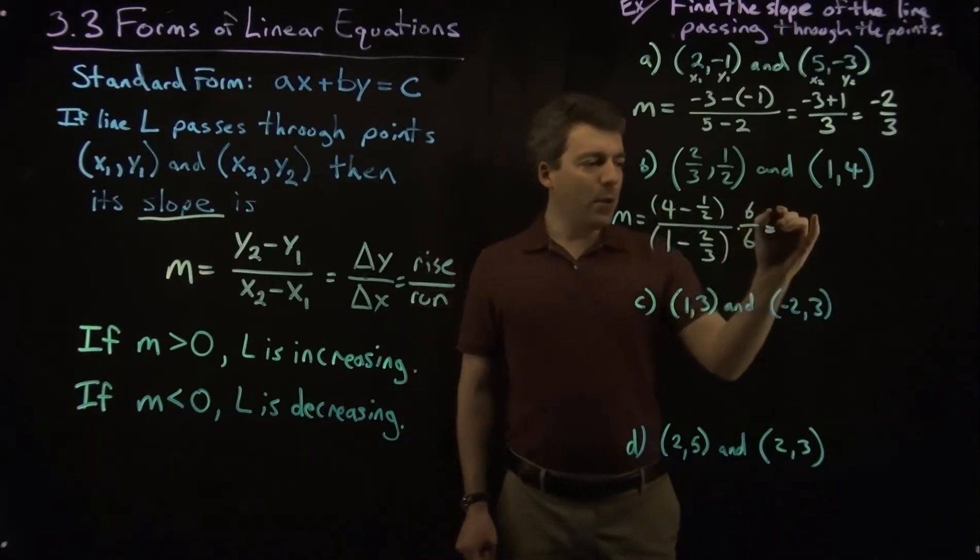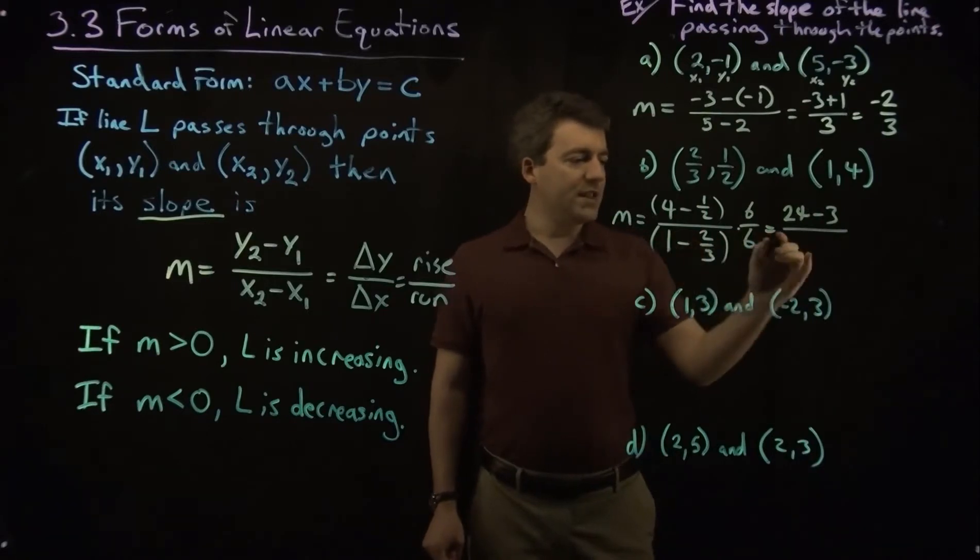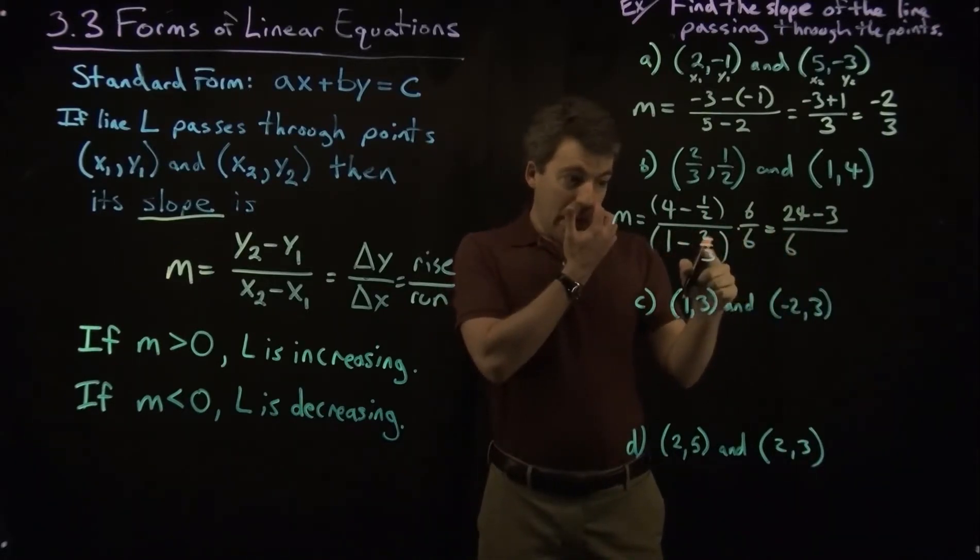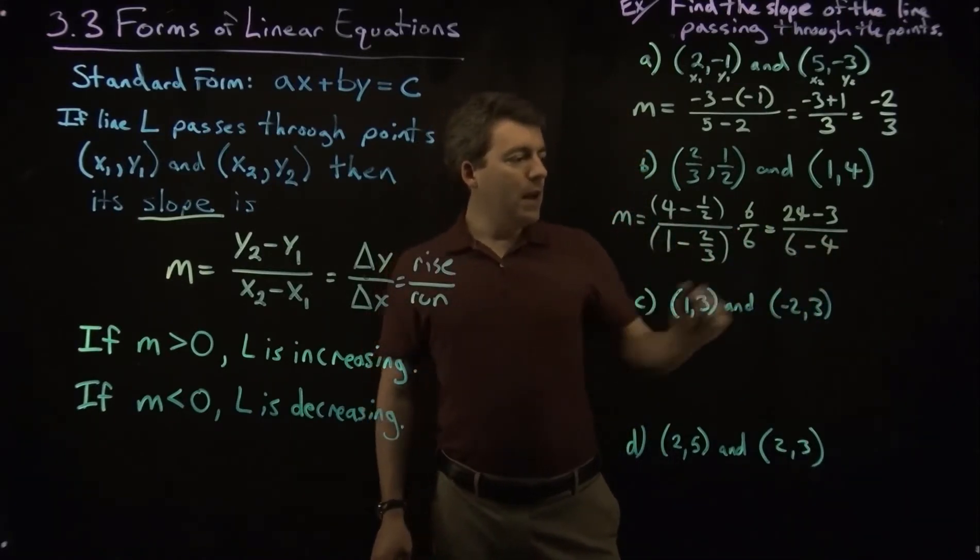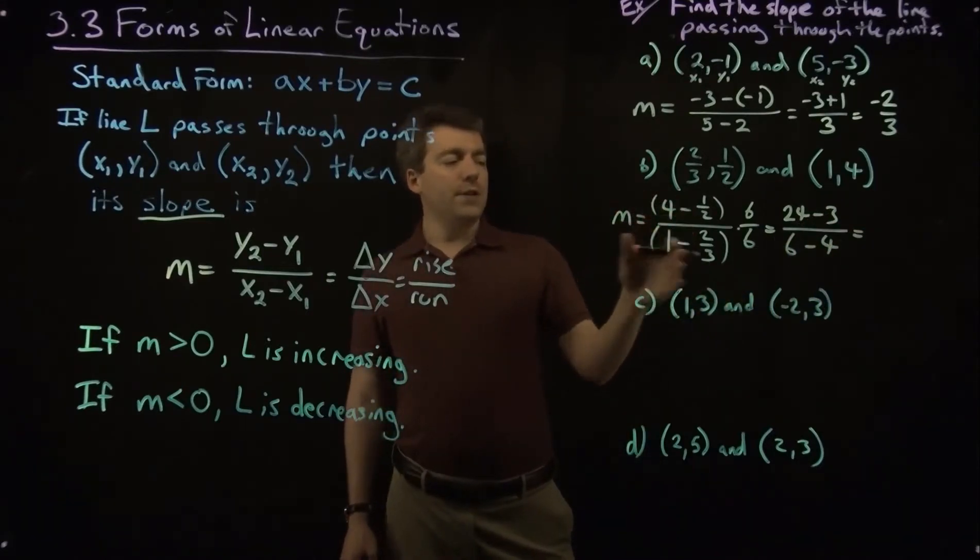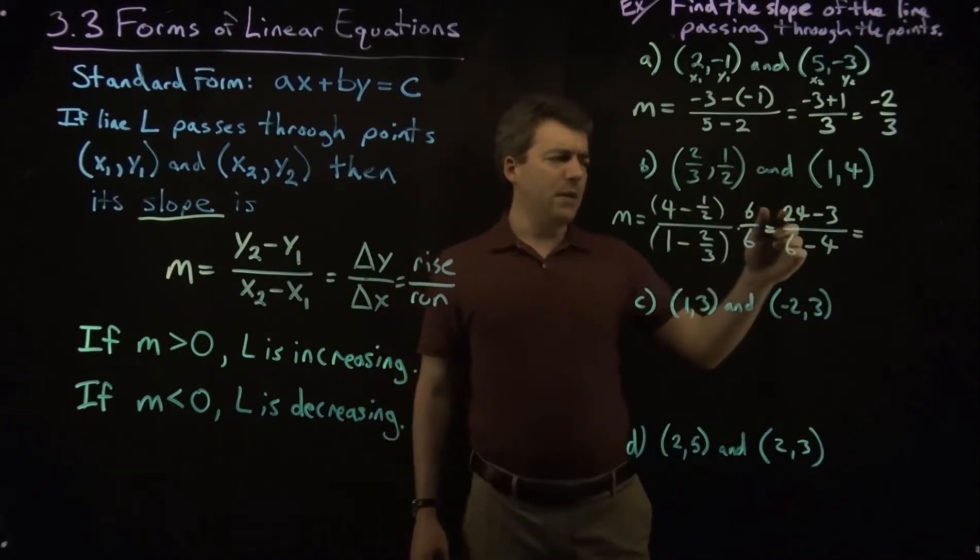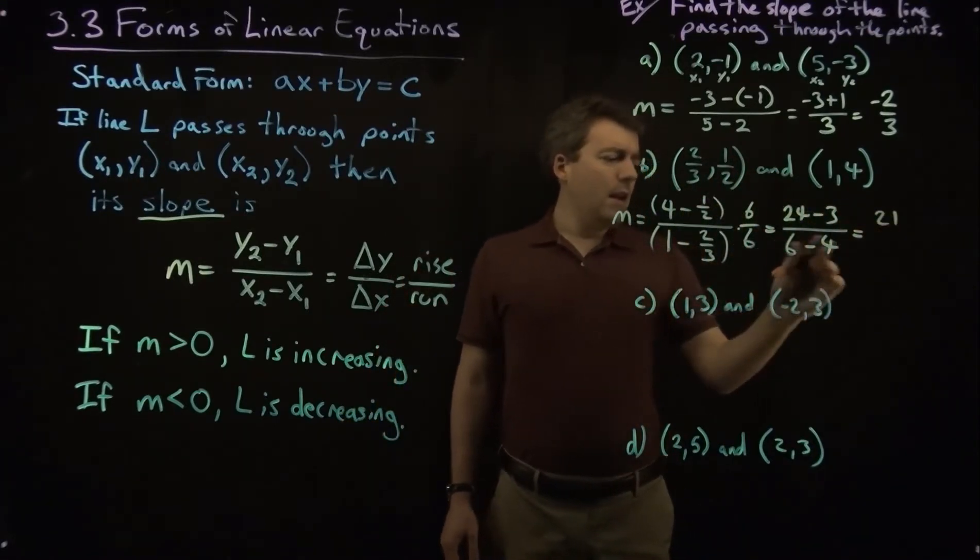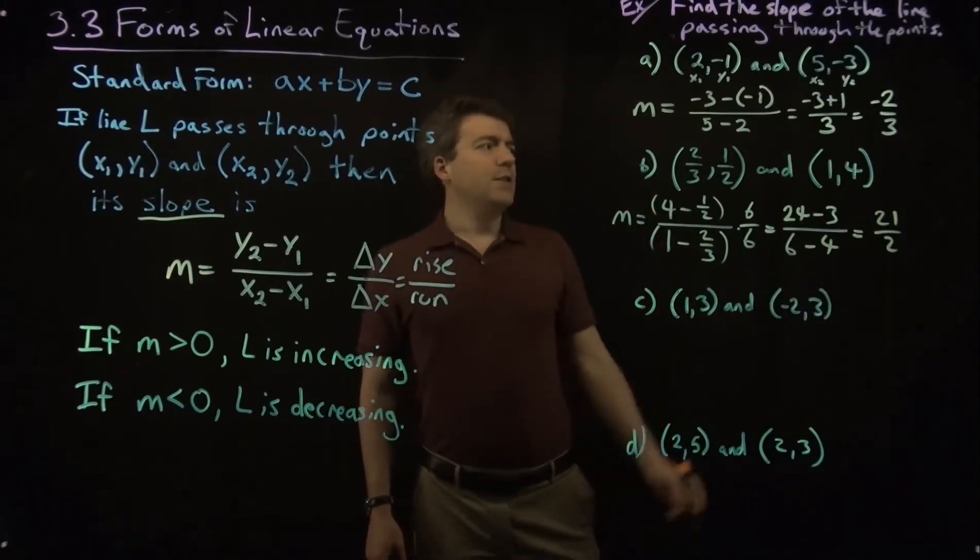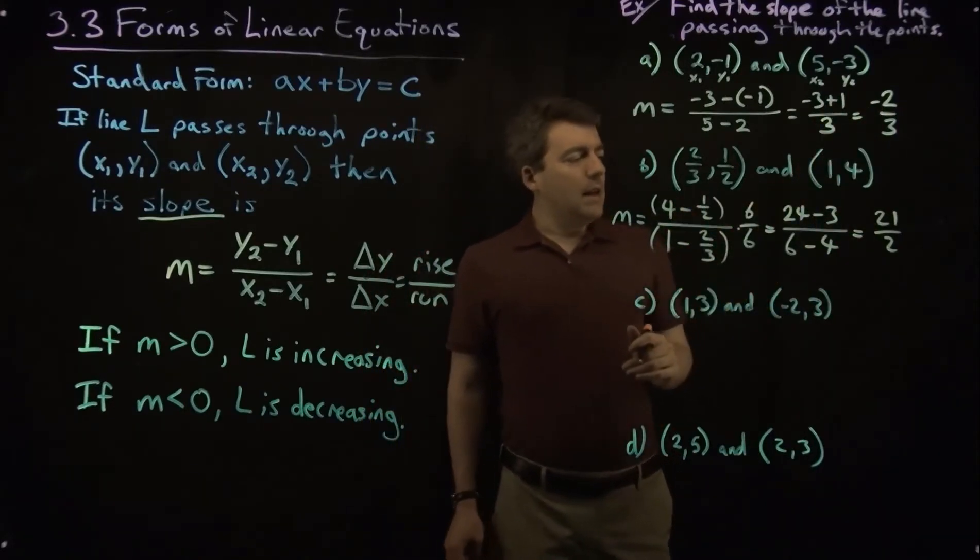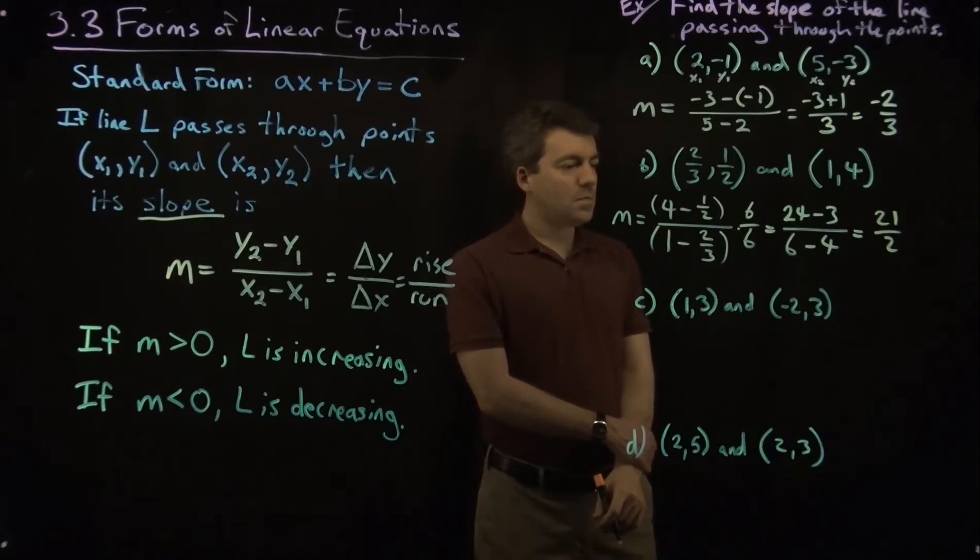All right. If we do that, we get 6 times 4, which is 24. 6 times 1 half is 3, 6 times 1 is 6, and 6 times 2 thirds would be 4, because the 6 divided by 3 is 2, and 2 times 2 is 4. All right. Now, we've got fractions over here. Here, we just have difference of natural numbers. Much better. So 24 minus 3 is 21, and then 6 minus 4 is 2. So 21 over 2. All right. So much steeper than this line. It's also positive, so we know this line is increasing.